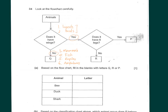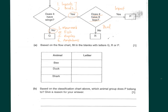If the animal has wings, the next question is: does it have six legs? Six legs means it is an insect — if yes, it is an insect; if no, it is a bird. So for part A, filling in letters P, Q, R: a bee (insect) is P, a duck (bird) is R, and a shark (fish) falls under Q.